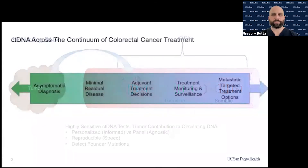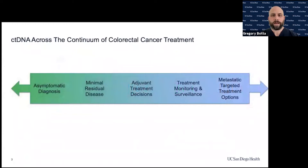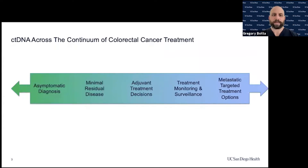The application of cell-free DNA and circulating tumor DNA is on a continuum. On one end, we have asymptomatic diagnosis — if someone had high representative circulating tumor DNA drawn from their blood, it would raise concern for cancer. On the other end, we have metastatic targeted treatment options with panels of specific genes tied to specific therapies. In the middle is where ctDNA falls: it helps us make treatment decisions in the adjuvant setting, detect minimal residual disease after treatment, and enable monitoring and surveillance.